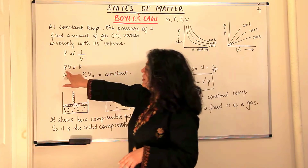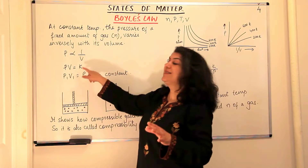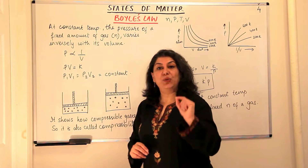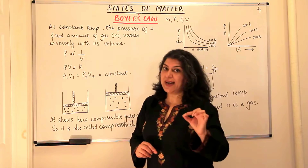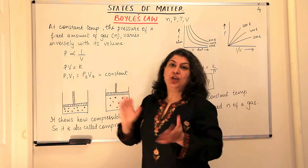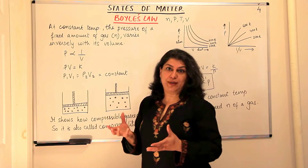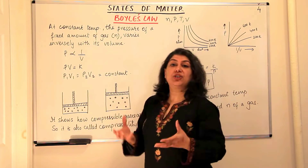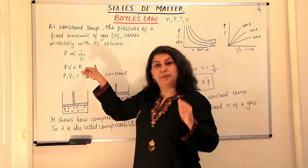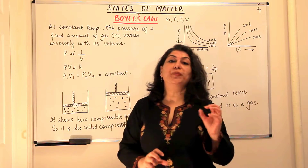So the product of pressure and volume should be constant. When is it constant? When you have a fixed amount of gas and you are measuring it at a certain temperature without changing the temperature during measurements. The condition for Boyle's law to be applicable is that the temperature and the number of moles of gas should be fixed.